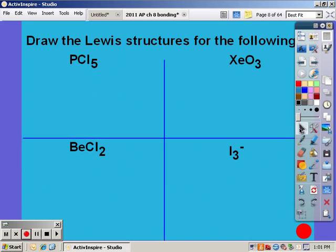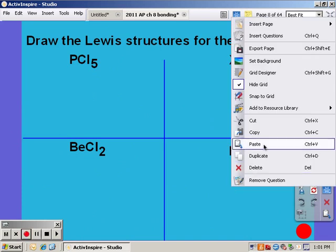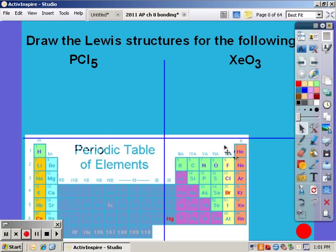So I'm going to draw the Lewis structure for PCl5. To do that we need to count up our valence electrons. Phosphorus having five, each chlorine having seven. So that gives us forty valence.